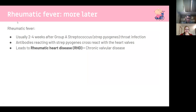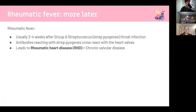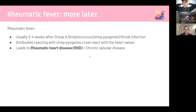Rheumatic fever has a whole separate lecture later. It typically occurs two to four weeks after a Group A Streptococcus throat infection. The antibodies against Strep pyogenes are very similar to antigens on the heart valves, creating cross-reactivity — the antibodies mistake the heart valves for the bacteria. This makes it essentially an autoimmune condition, likely a type 4 hypersensitivity reaction.